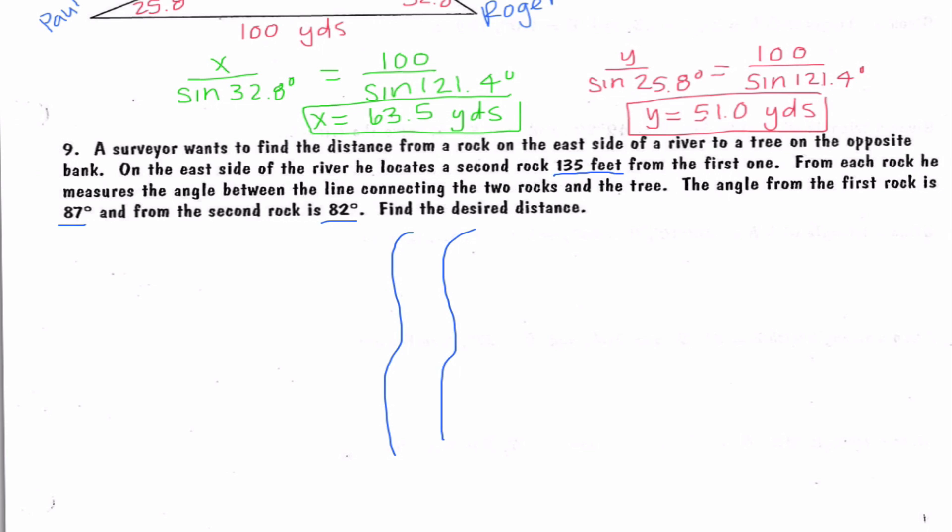Okay, so I already highlighted this stuff that I thought was kind of important. And I'm going to go ahead and draw a lovely tree right there. And now I'm going to draw a rock and a second rock. And I know that those three things form a triangle. They told us the two rocks are 135 feet away from each other. The angle from the first rock is 87 degrees and the angle from the second rock is 82 degrees. And we want to figure out how far away is the first rock from the tree. So the first thing that I'm going to figure out is this missing angle, which ends up being 11 degrees.